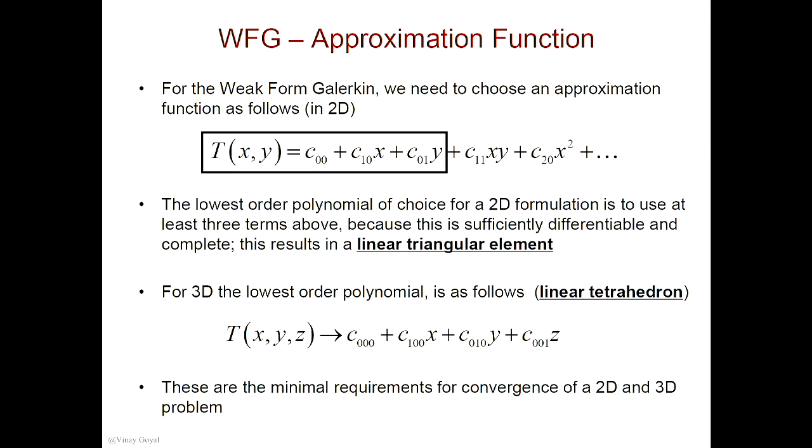However, I could use this approximation function and plug it into weak form, but that's not very convenient because the unknown coefficients in weak form Galerkin have no physical meaning. So what if we write these unknown coefficients in terms of the nodal unknown quantities? That's really what we're trying to do — relate these unknown coefficients to unknown quantities of the nodes, because they have more meaning there.